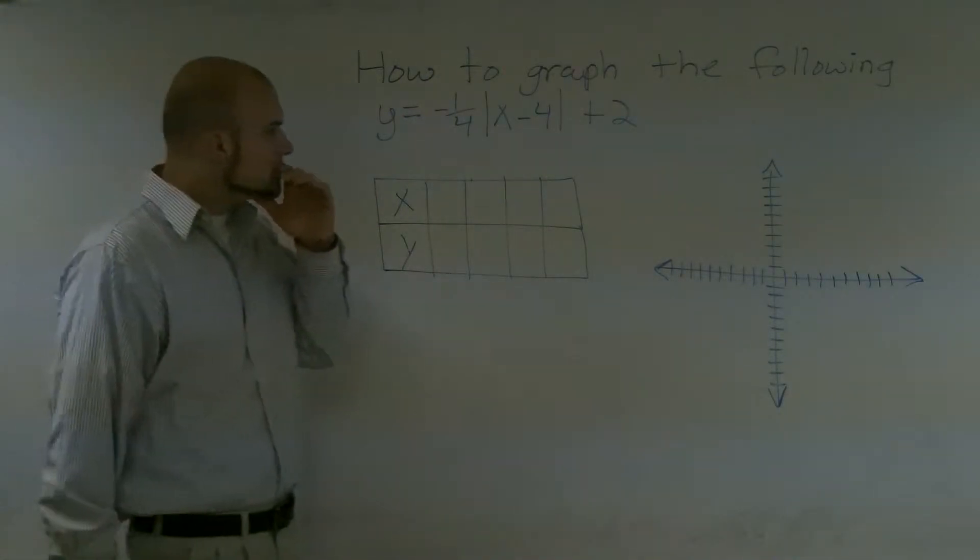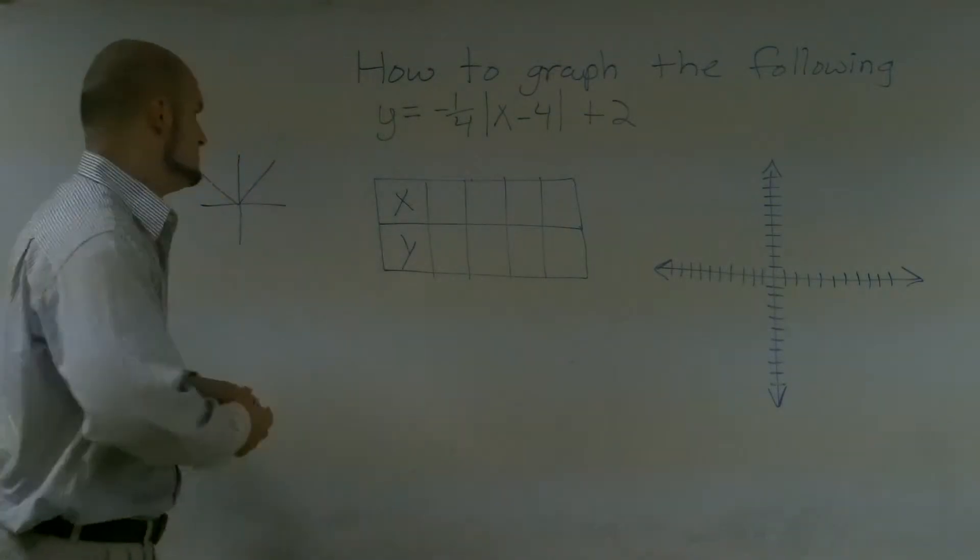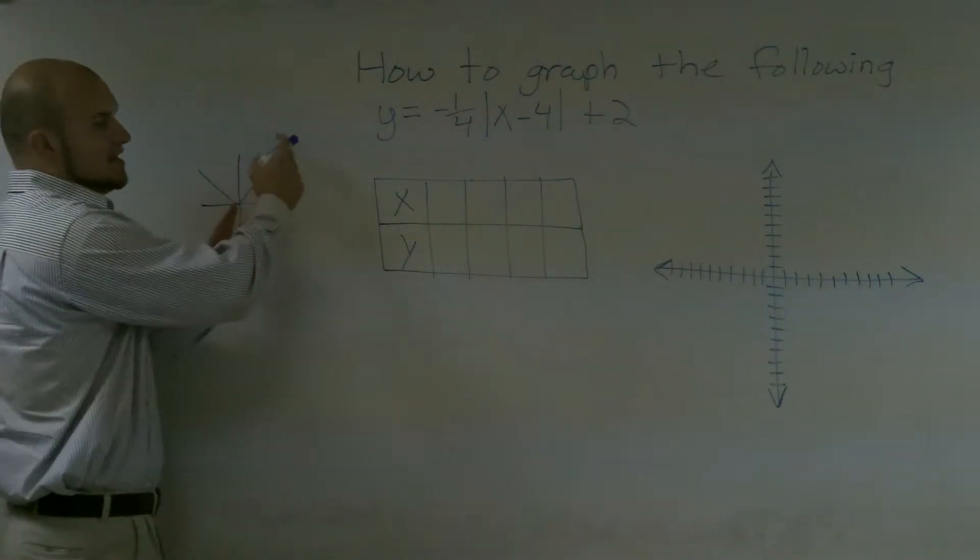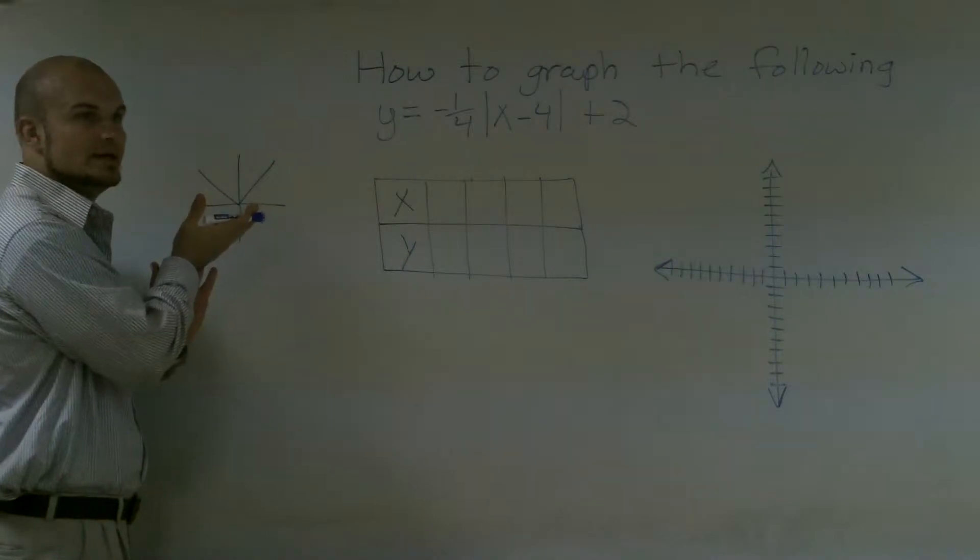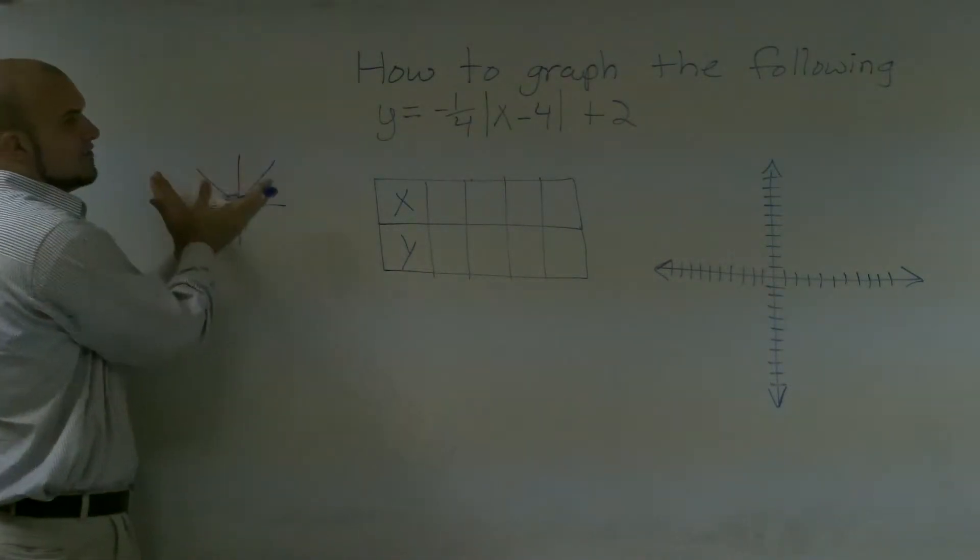So what we need to do is when we're picking a table of values, we need to be very careful on what values we pick, because if we just pick all the values on the right side of the V, it's going to look like a straight line. And we'll be confused on what points are going to be on the left and what points will be to the right of our V.